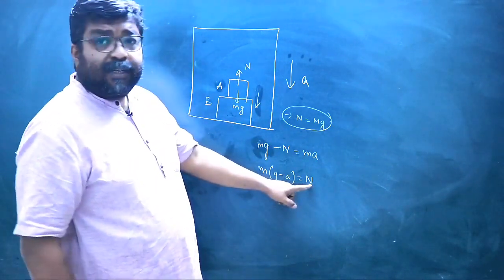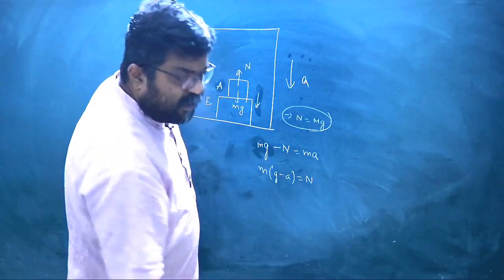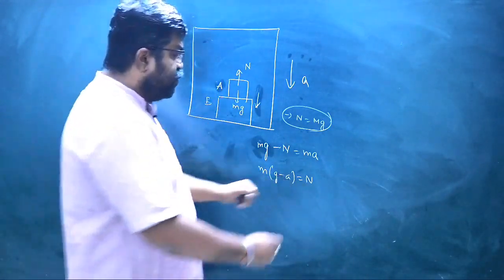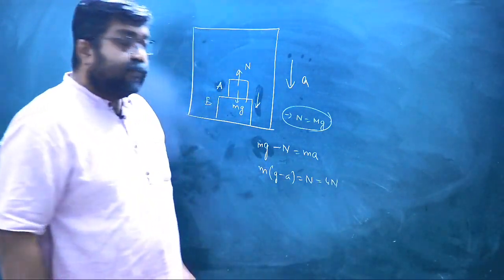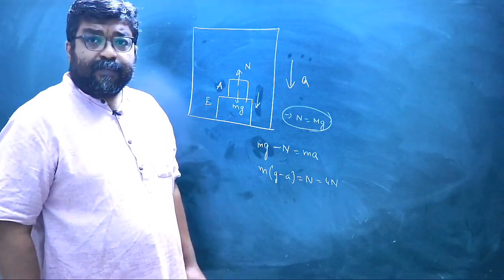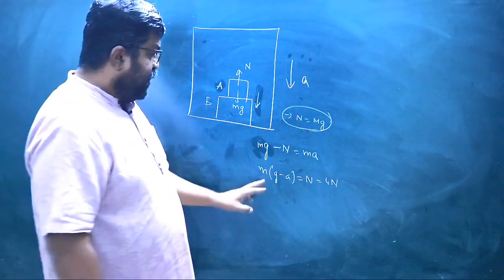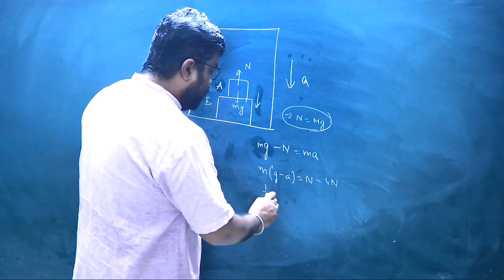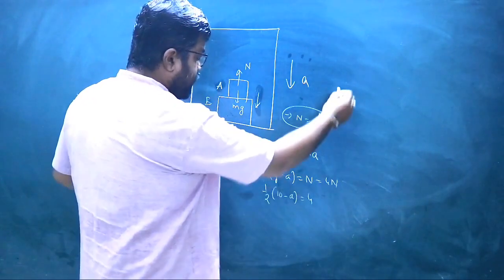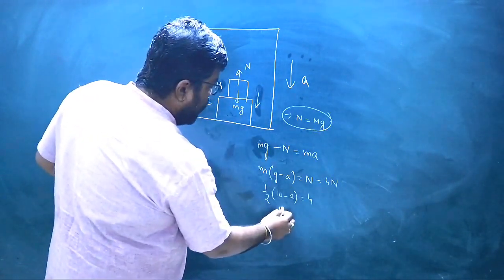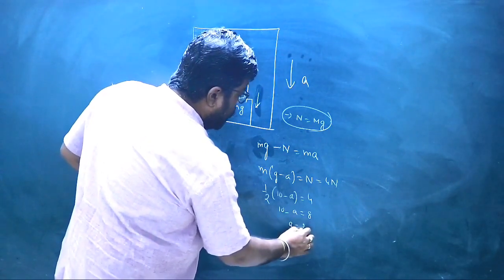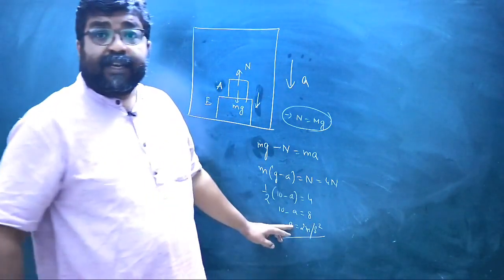The force exerted by block A on block B is 4 N, so the normal reaction N = 4 N. The mass is 0.5 kg, and taking g = 10 m/s². Substituting: 0.5 × (10 − A) = 4, so 10 − A = 8, therefore A = 2 meters per second squared. The acceleration of the lift is 2 m/s².